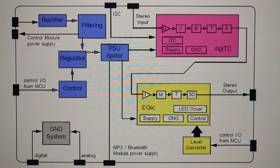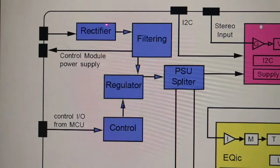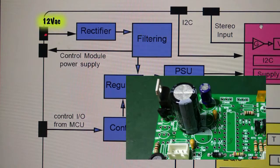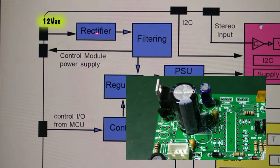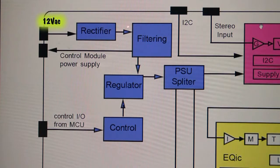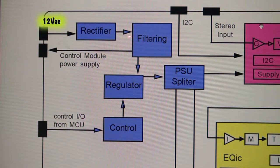Let's take a look at the power supply first, starting with the AC signal. This is the 12-volt AC signal and it will feed into the bridge rectifier. The bridge rectifier will rectify the AC signal into a pulsating DC, and that pulsating DC is filtered by the capacitors.